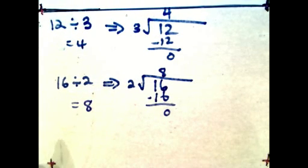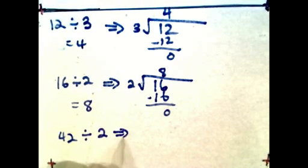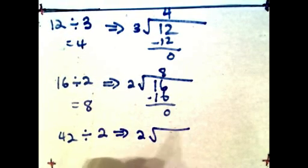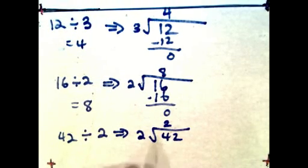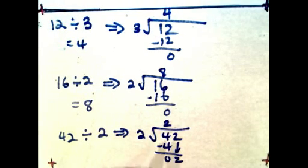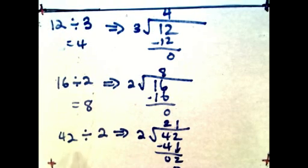Let's try a bigger number: 42 divided by 2. So we express it as 2 divided into 42. Notice we can go 2 divided into 4 — how many times? Twice. So 2 times 2 is 4, subtract the difference, that's 0. Bring down the 2 — that may be something new to you. Then 2 goes into this 2 how many times? Once. Subtract: 1 times 2 is 2, so it's 0. The answer is 21.